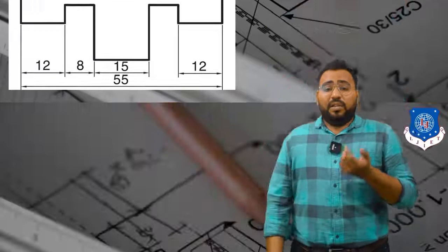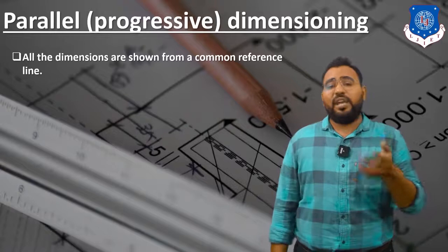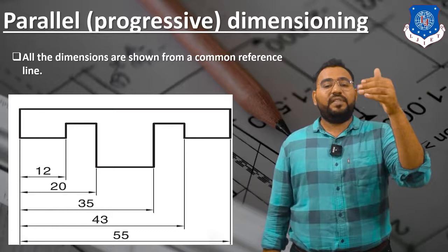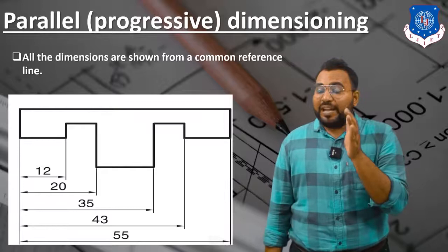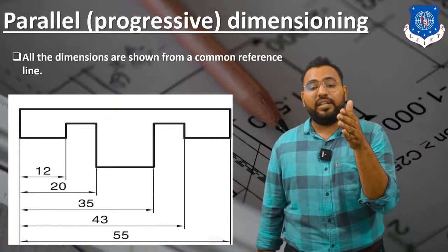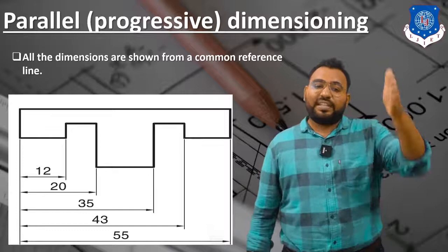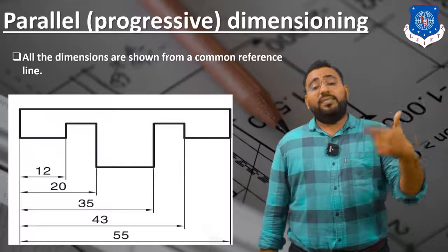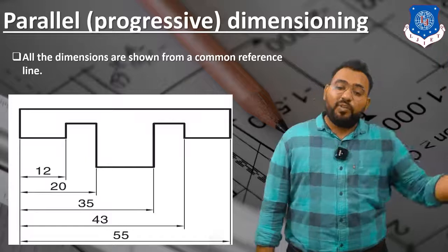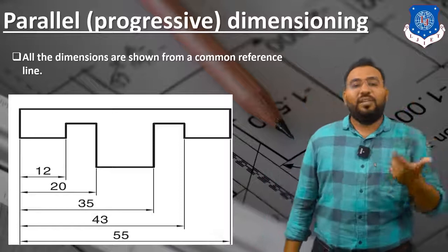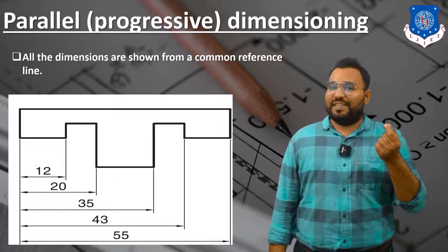The second subtype is parallel dimensioning, also called progressive dimensioning. Here, all dimensions are shown from a common reference line. In the figure, dimensions 12, 20, 35, 43, and 55 are all given from one common reference line on the left-hand side of the drawing. Each dimension — 12, 20, 35, 43, and 55 — is measured from that same left extension line. Because all dimensions originate from one common reference line, this is called parallel dimensioning.